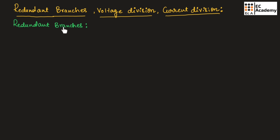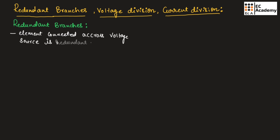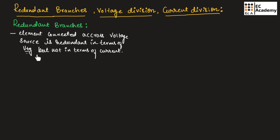Redundant branches are branches that are having less importance or that can be neglected. Any element connected across a voltage source is redundant in terms of voltage, but not in terms of current. Any element connected in parallel to the voltage source is redundant.